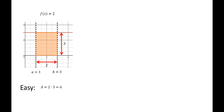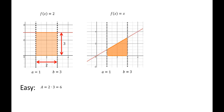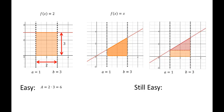Let's make that a little more difficult. Suppose we wanted to find the area under the curve f of x equals x. Again, it's not really a curve — it's a straight line, but it's slanted this time, so it's a little bit more difficult, but still easy. We could just separate it into a triangle and a rectangle and use basic geometry to find that area.